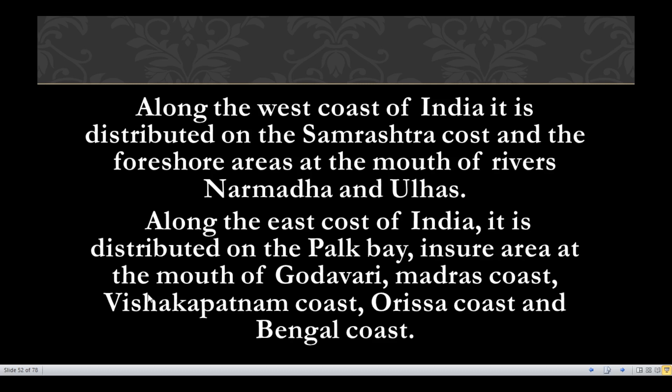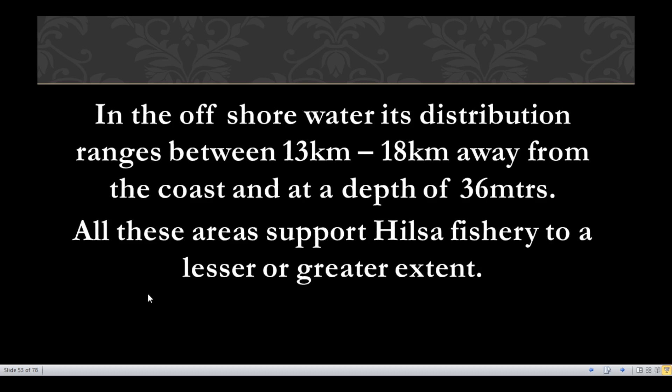On the east coast, Hilsa ilisha is distributed on Palk Bay, and in inshore areas at the mouth of Godavari, Madras coast, Visakhapatnam coast, Odisha coast, and Bengal coast. Overall, on both east and west coasts, the distribution of Hilsa fishery extends from 13 to 18 kilometers away from the coast, at a depth of 36 meters.